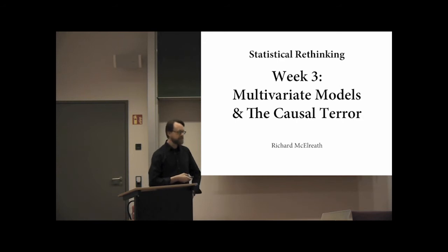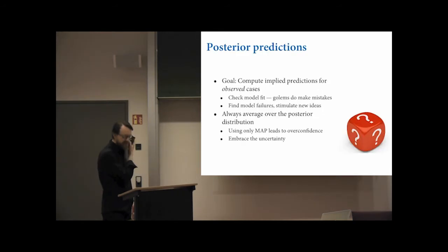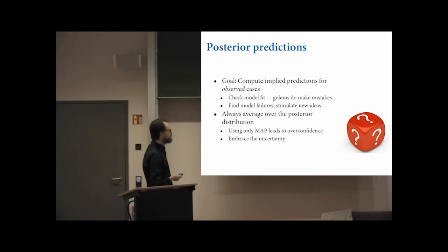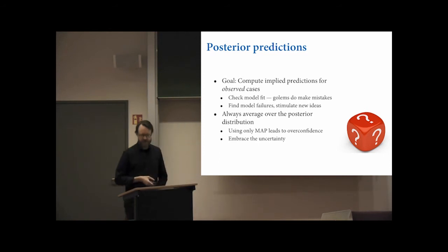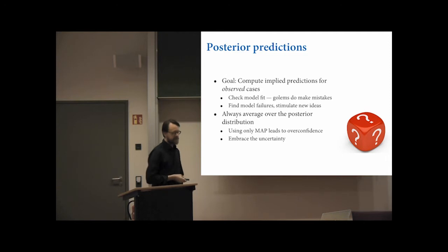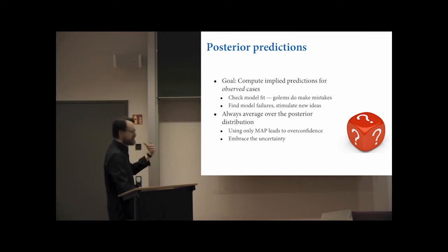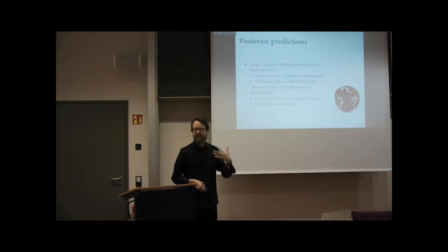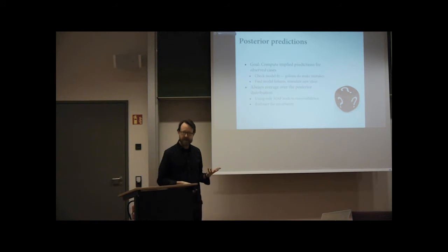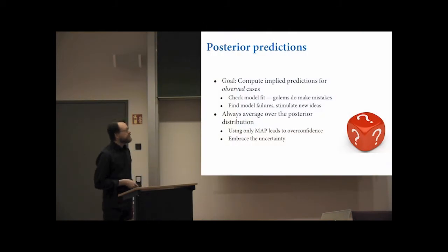Hello everybody, welcome back. We've got a lot to do with the causal terror, finishing up chapter five. When I left you last time, we were looking at ways to plot posterior predictions from a multivariate regression. To remind you, there are lots of options and you're not constrained by anything except your imagination and the bounds of decency. Our goal with posterior predictions is to see what the model thinks about cases we have observed — the ones we used to train the data — and potentially cases we haven't observed.